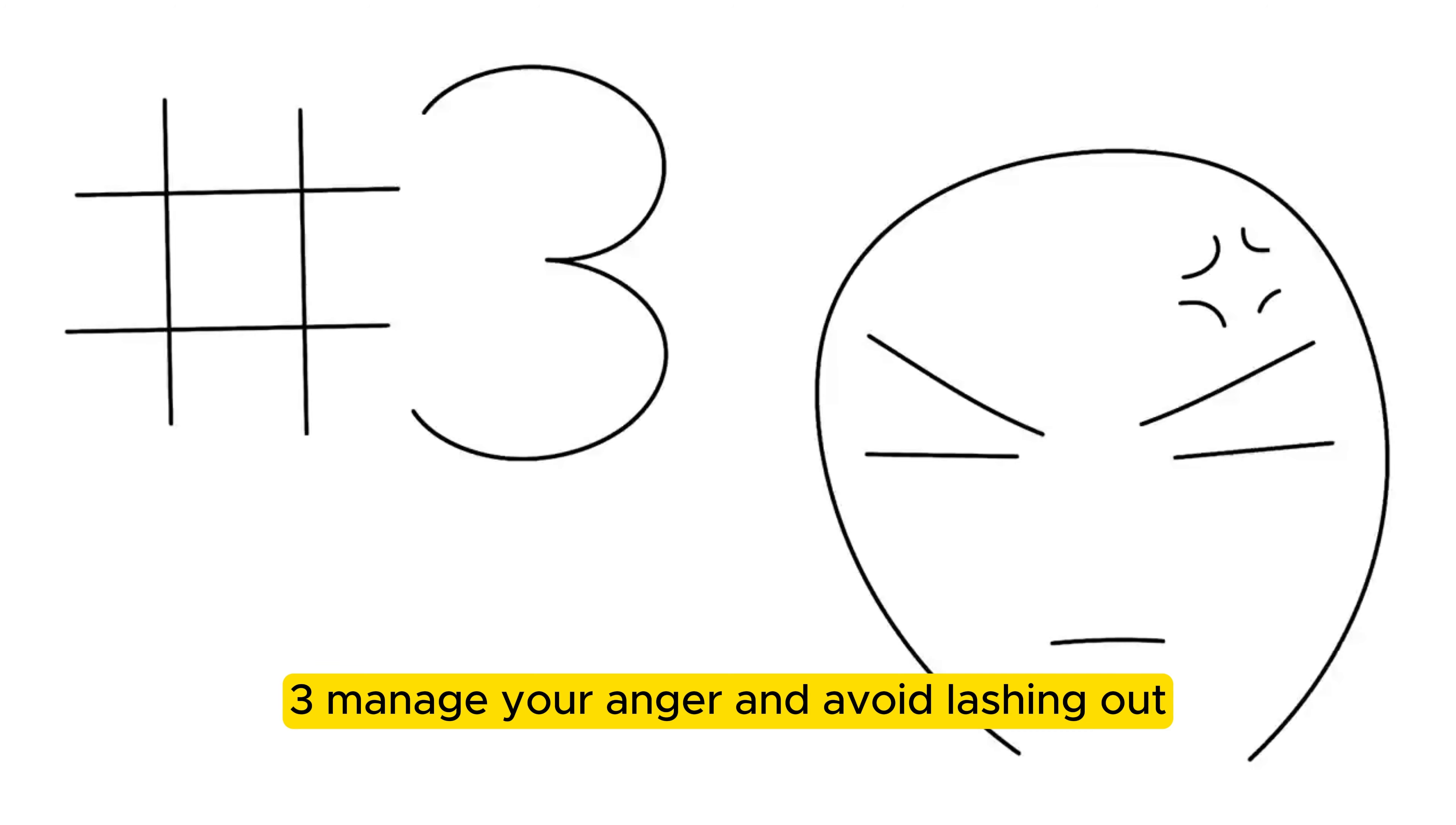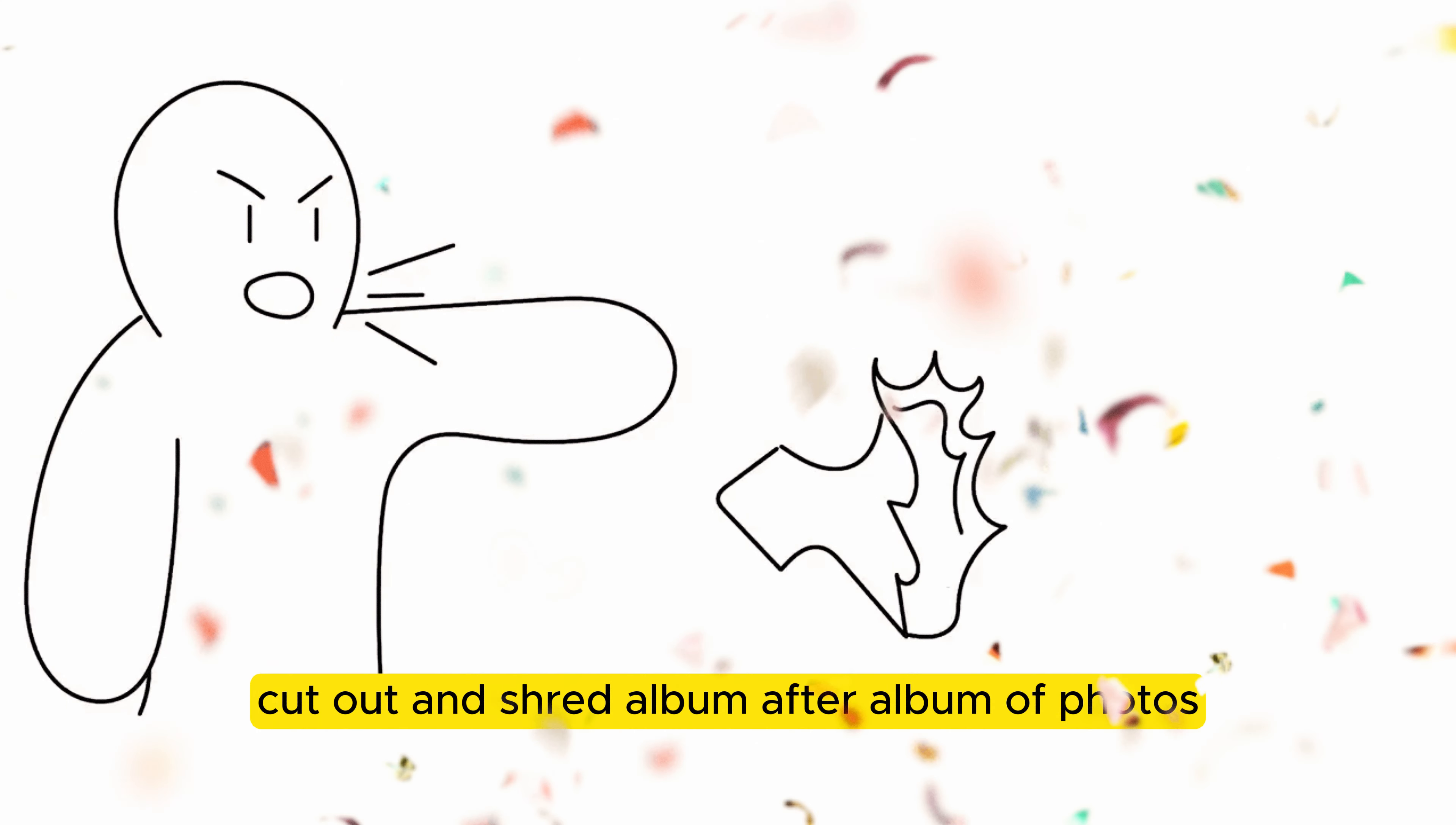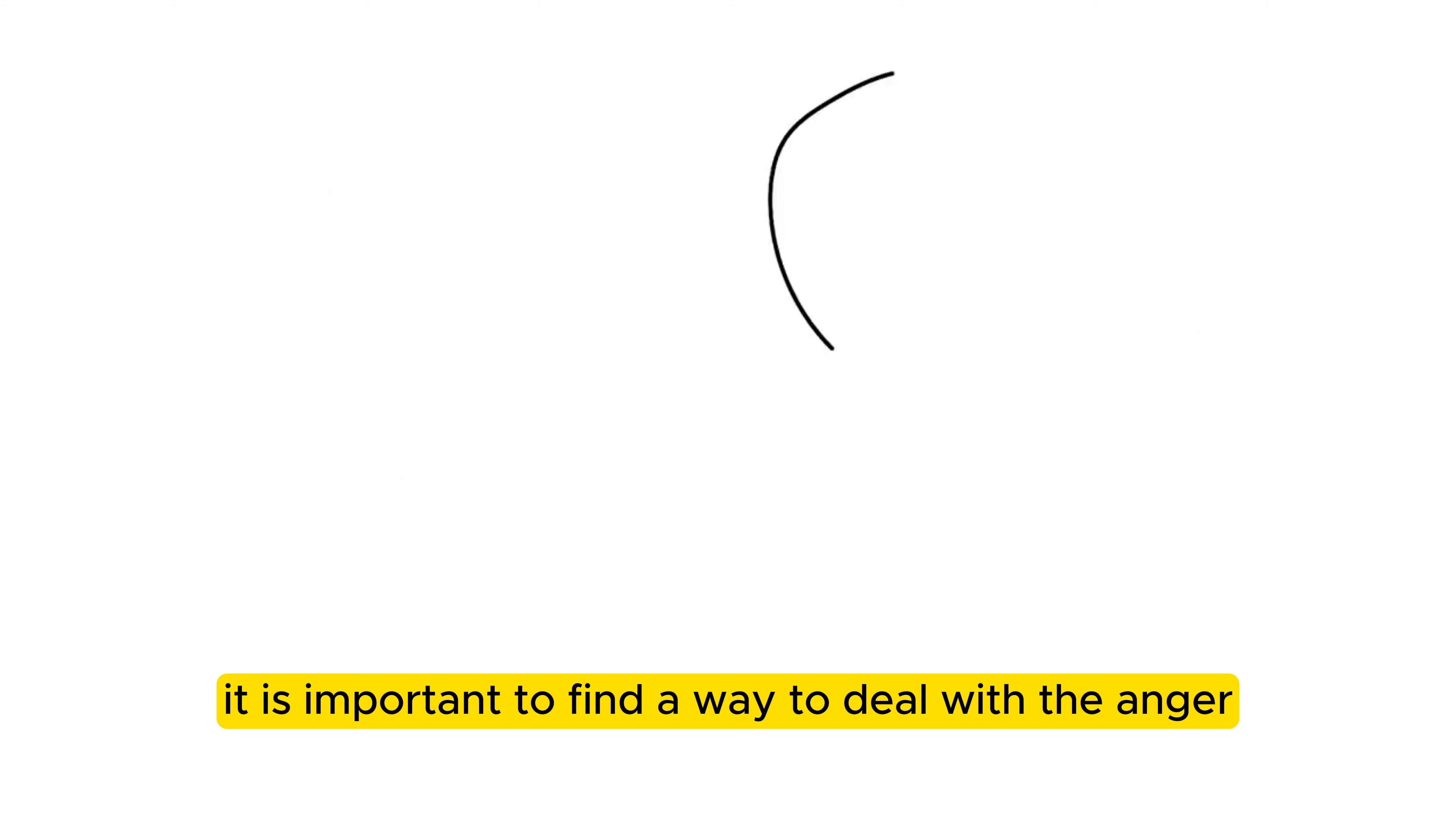3. Manage your anger and avoid lashing out. People deal with anger differently. Some people deal with it with grace and passiveness that epitomizes maturity. There are also people who would burn closets worth of clothes, destroy furniture and memorabilia, cut out and shred album after album of photos, lash out at friends who mention something triggering, and on occasions come up to their ex and make a scene. It is important to find a way to deal with the anger of a breakup.